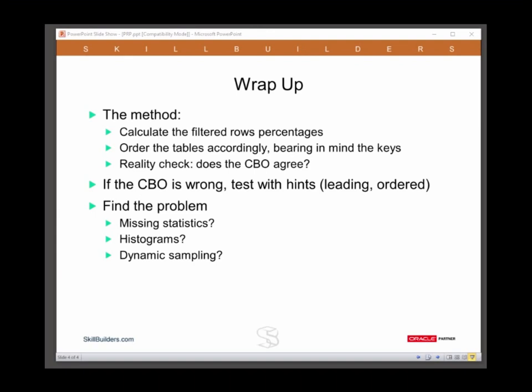So to conclude, how does the filtered rows percentage for tuning SQL work? You calculate the percentage of rows remaining in each input table after applying the constant filters.